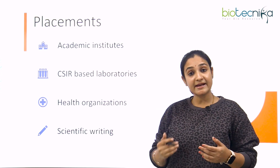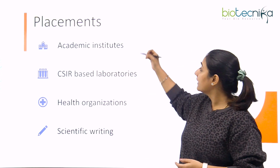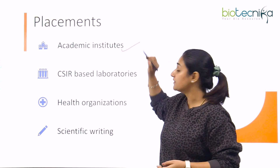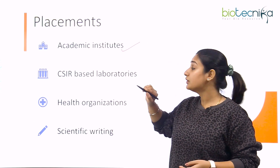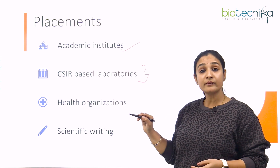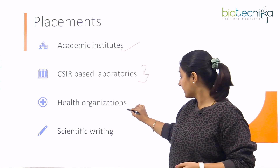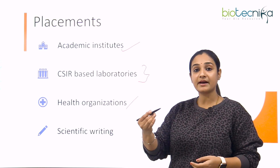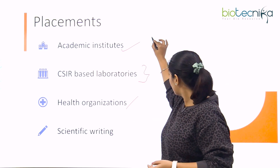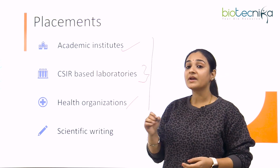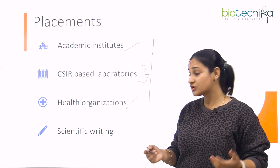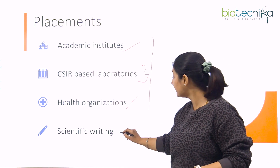When it comes to placement, the first option is teaching in academic institutes. You can also go for CSIR-based laboratories, or work for health organizations in the public or private sector. If you don't want any of these, after becoming a virologist you can even take up a job as a scientific writer.